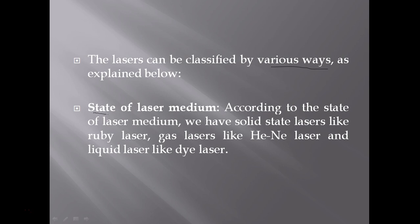The first classification method is the state of laser medium. According to the state of laser medium, we have solid state lasers like ruby laser, gas lasers like helium neon laser, and liquid lasers like dye laser. I will discuss all these types of lasers in my upcoming video lectures.